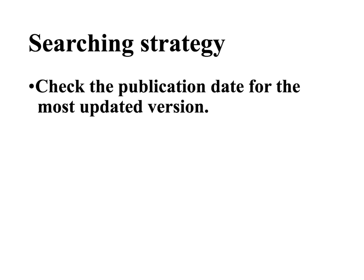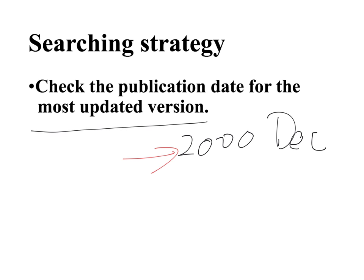You also need to check whether the publication date is up to date or not. For example, if an article about blue jay birds was published in December 2000, we may not want to use that website because it could be 15 years old and the information may not be current. We should look for the most up-to-date version. That is what we talked about with the searching strategy — I hope you can learn it and apply it.